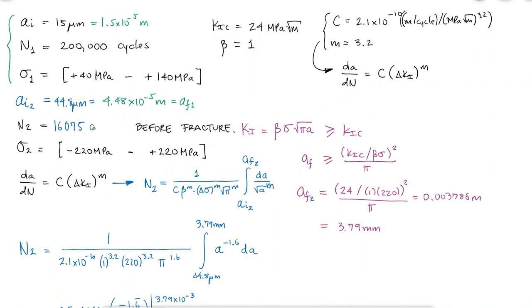To sum up what we've done here, our material started with a crack length of 15 microns that will grow to 44.8 microns after 200,000 cycles of tensile stresses that vary from 40 to 140 MPa. After an additional 16,075 cycles of alternating compressive and tensile stresses of 220 MPa, that crack will reach a length of 3.79 mm which will cause the stress intensity factor Ki to exceed the fracture toughness of the material and break.